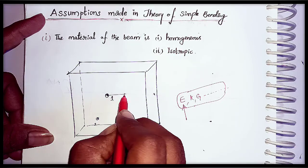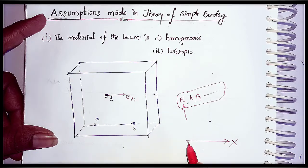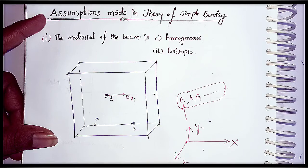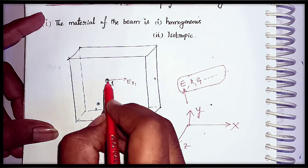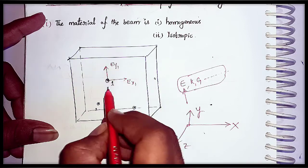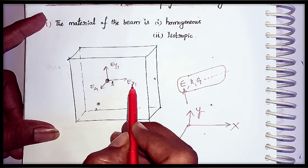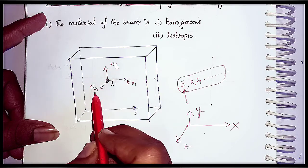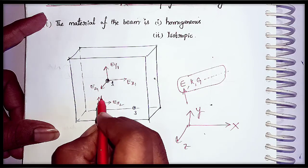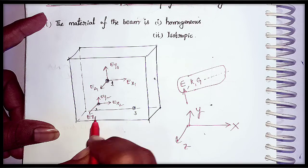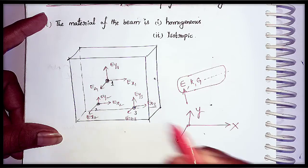Let us consider the Young's modulus for this cubical structure at point one in the x direction is Ex1. The x direction, y direction, and z direction are as shown. The Young's modulus at point one in the y direction is Ey1, and in the z direction is Ez1. Similarly, at point two we have Ex2, Ey2, and Ez2, and at point three we have Ex3, Ey3, and Ez3.